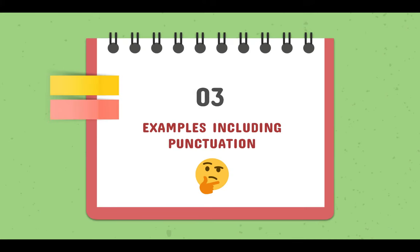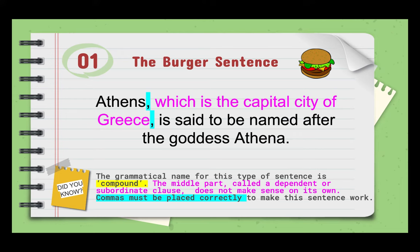For each of the different sentence types I'll give you clear examples including how to use the punctuation you need to make the sentences work best. Starting with the burger sentence — the grammatical name for this type is a compound sentence. The middle part is a dependent or subordinate clause, which doesn't make sense on its own. You need to place commas correctly around the clause to make this kind of sentence work.